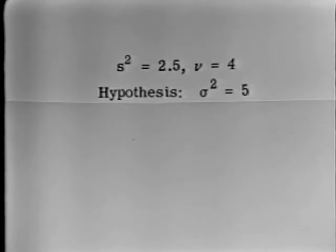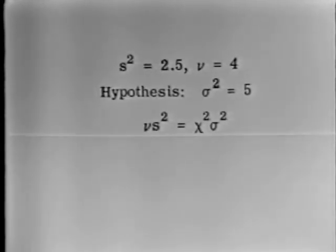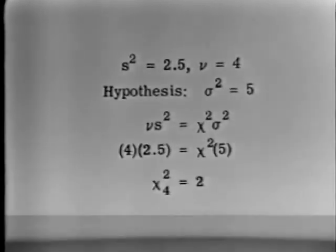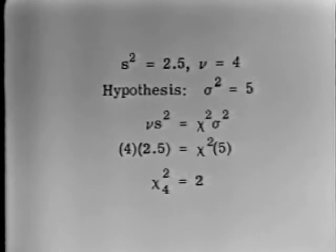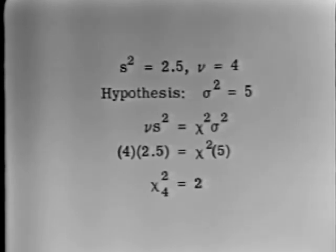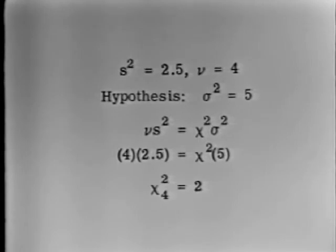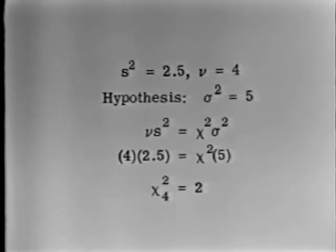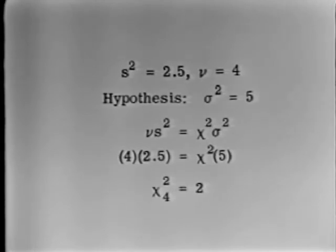What is our attitude toward that hypothesized value for sigma-squared? Let's use the key equation: nu times s-squared equals chi-square times sigma-squared. Substituting two and a half for s-squared, four for nu, and five for sigma-squared gives us four times two and a half equals chi-square times five, so chi-square equals two. The subscript four on chi-square tells us which chi-square distribution we're dealing with — chi-square with four degrees of freedom — because four is the number of degrees of freedom in s-squared.